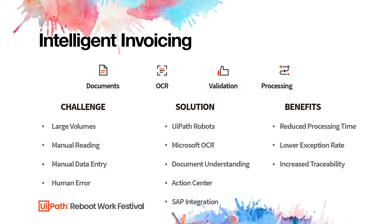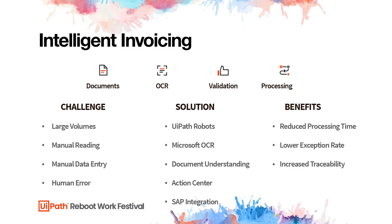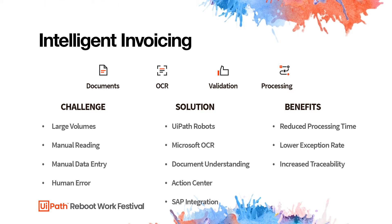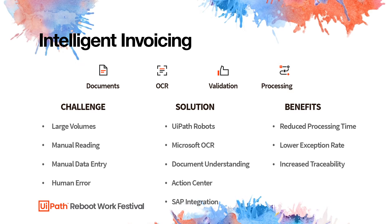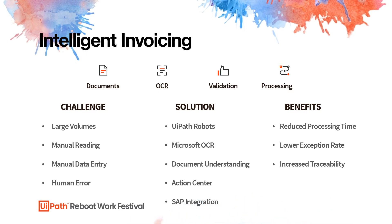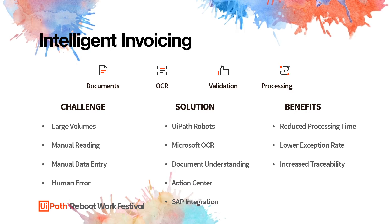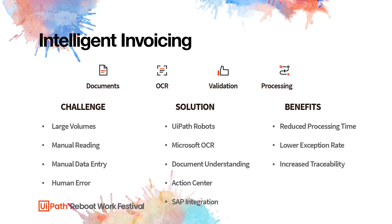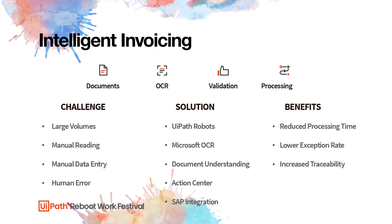The process that we're going to look at right now is an end-to-end process. It starts by receiving the documents via email or a folder. It processes them using our document understanding framework. We have human validation, and then the actions that a robot takes as part of our business process. The solution uses UiPath robots, Microsoft OCR, Abby, and Action Center, all wrapped into our document understanding framework and SAP integrations.